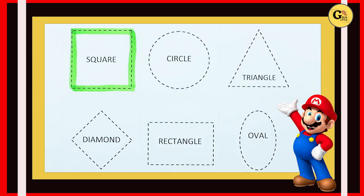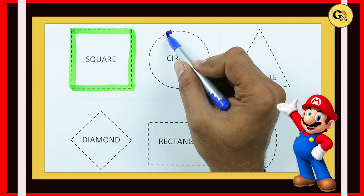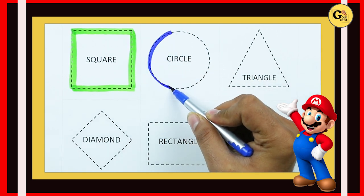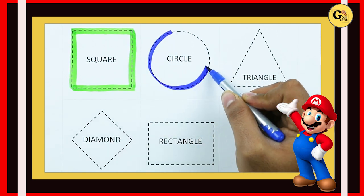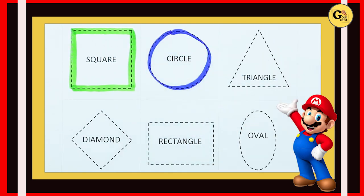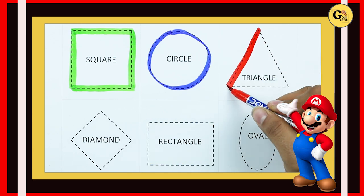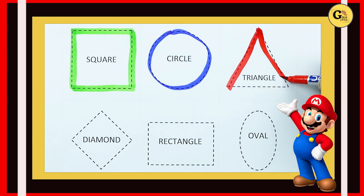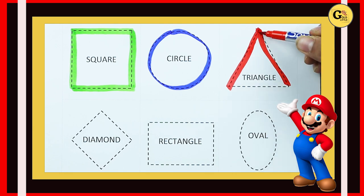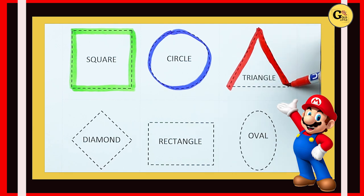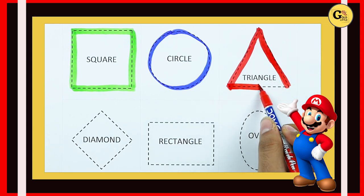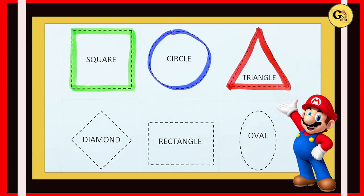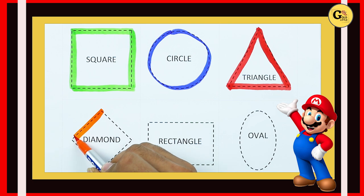It's called a square with green color. Circle — round, round, round, round — it's a circle with blue color. One sliding line, two sliding lines, and one sleeping line — it's a triangle with red color.